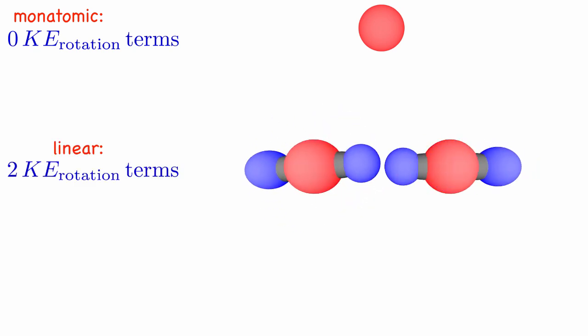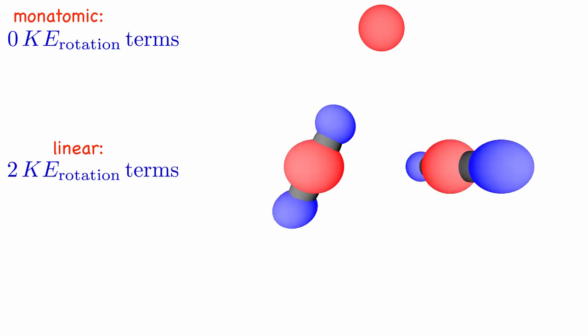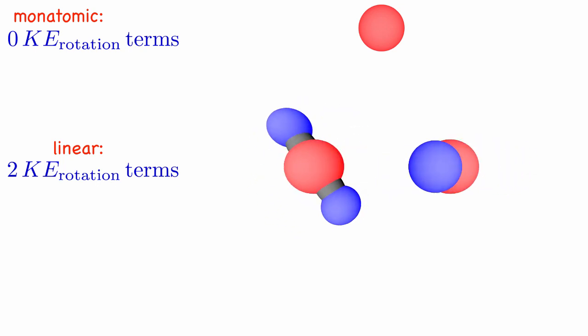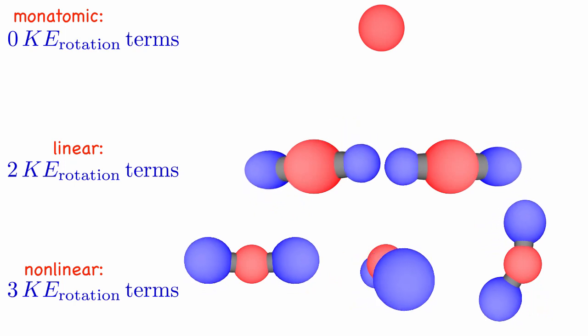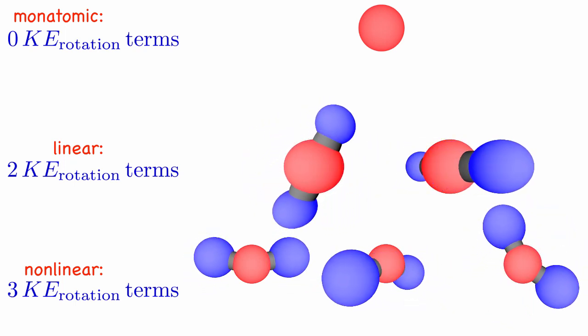Next, we need to determine how many rotational kinetic terms there are. For a single atom, there is no rotational kinetic energy at biological temperatures. For linear molecules, there are two types of rotations, since rotating around the long axis of the molecule is like rotating single atoms. Finally, for a nonlinear molecule, we can rotate around the three independent directions, so there are three kinetic energy terms for rotations in that case.